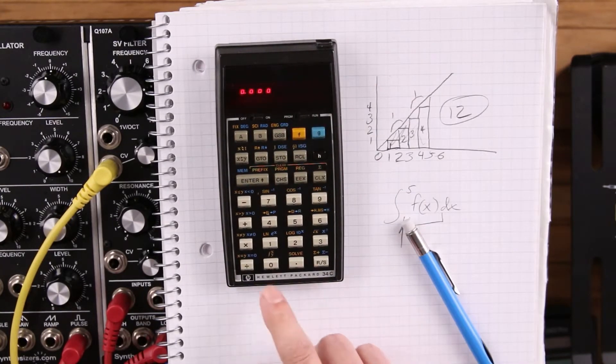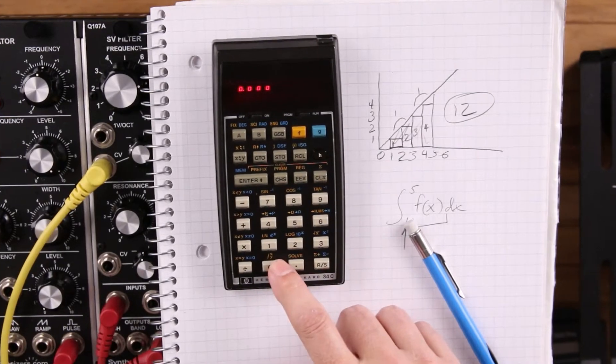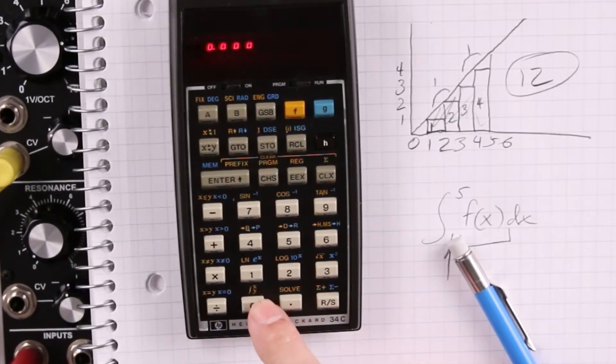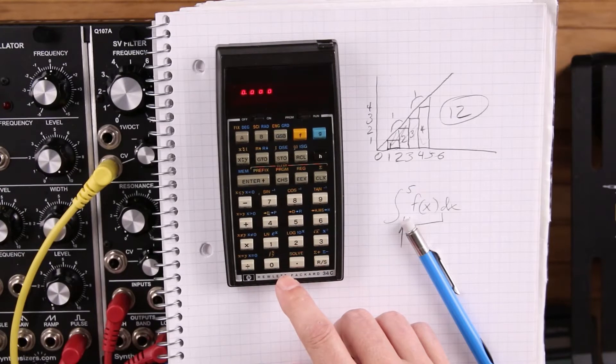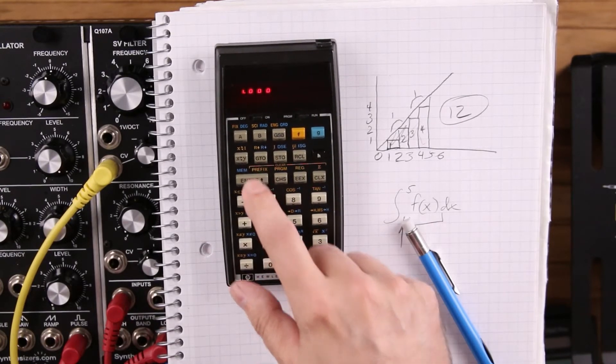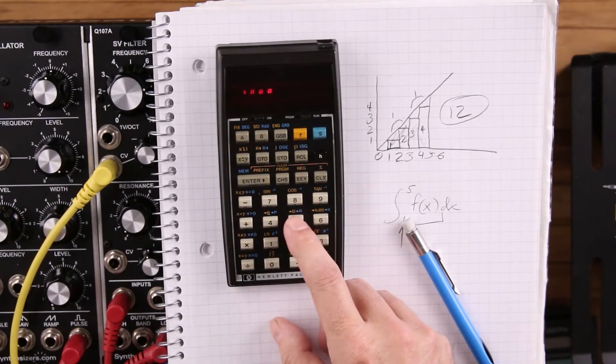Now what we're going to do is we're going to key in the limits of integration. If you'll notice right here, this is X and Y. Y is the lower boundary, and X is the top. So I'm going to key in one, enter, and five.